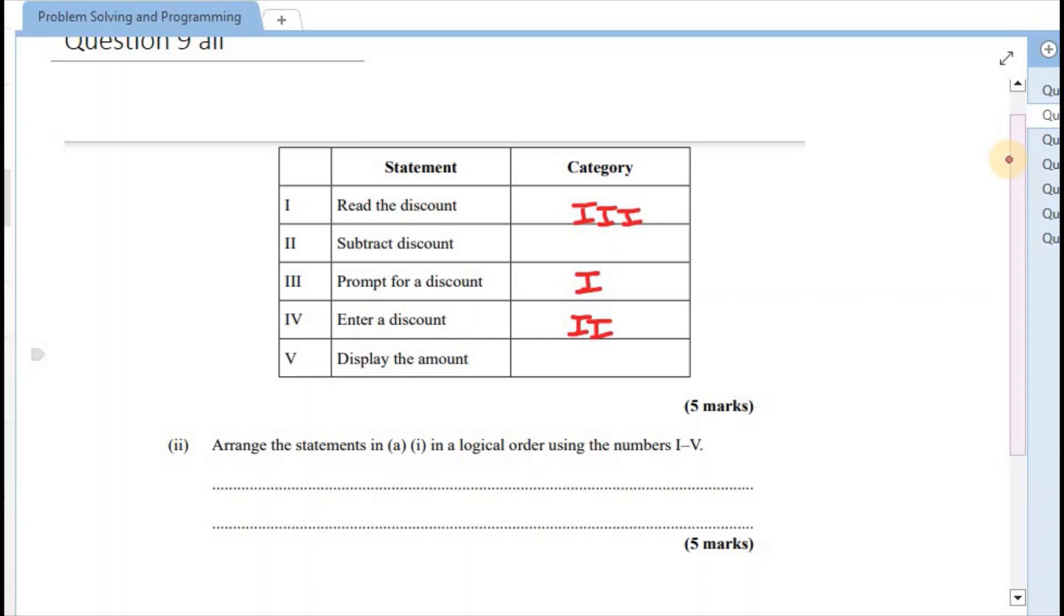After the computer reads, it is then able to subtract the discount or make a calculation, right? So that's 4. And finally, to display the amounts that should be given on screen. Alright, so that's the last one. Total of 5 marks for that question.